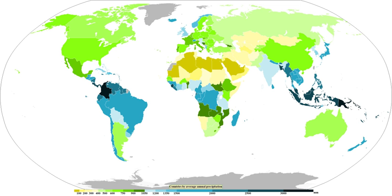Moisture that is lifted or otherwise forced to rise over a layer of sub-freezing air at the surface may be condensed into clouds and rain. This process is typically active when freezing rain occurs. A stationary front is often present near the area of freezing rain and serves as the focus for forcing and rising air. Given necessary atmospheric moisture, the rising air will condense into clouds, namely stratus and cumulonimbus.